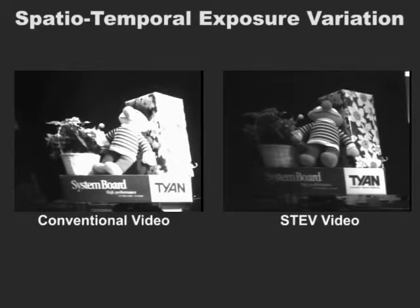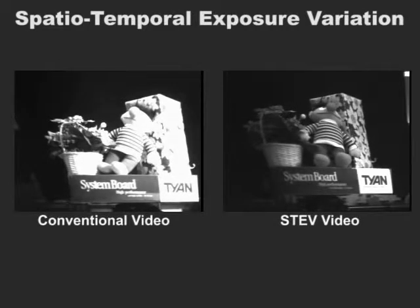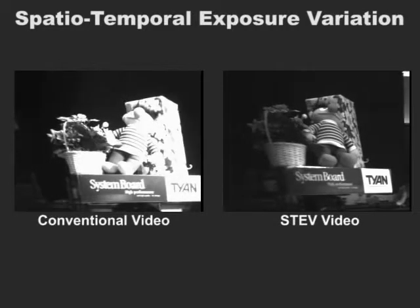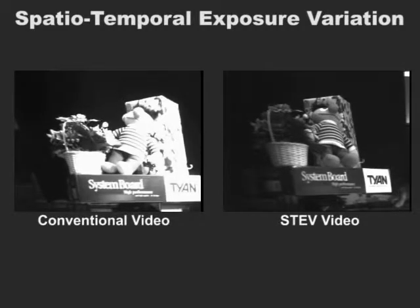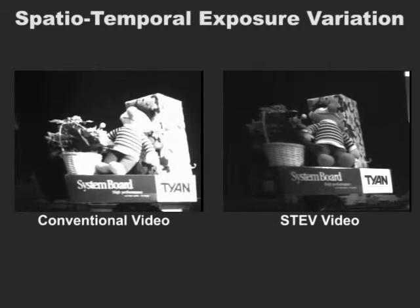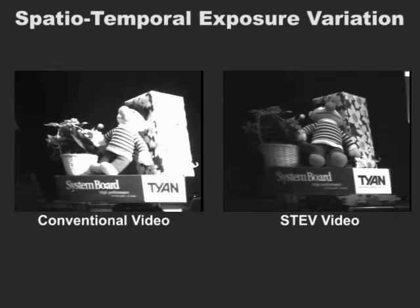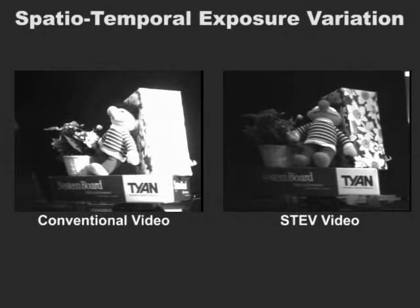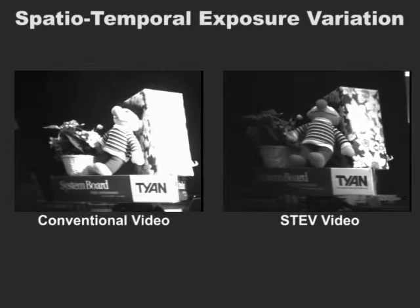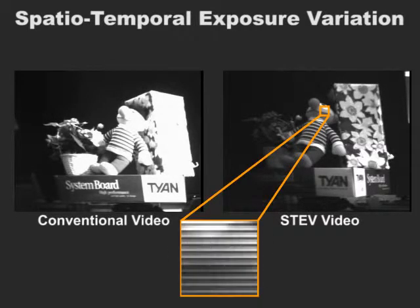An approach to high dynamic range imaging using spatially varying exposures was introduced by Naira Mikitsunaga in 2000. The programmable imaging system enables us to select the exposure levels over space and time to be the most suitable for the application at hand. Here, we see an unmodulated video sequence that suffers from saturation due to limited dynamic range, and the same scene captured using spatial-temporal exposure variations. The changes in the modulation functions can be seen in the inset video.